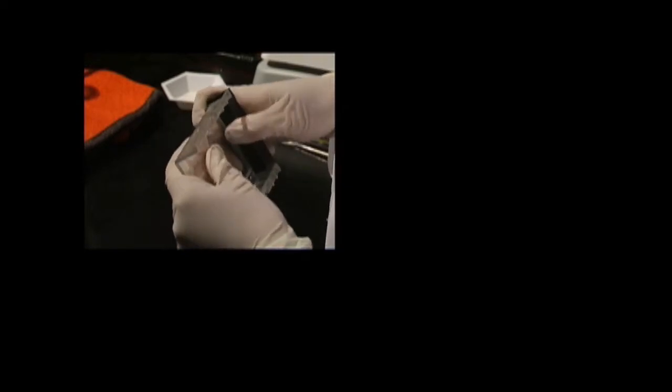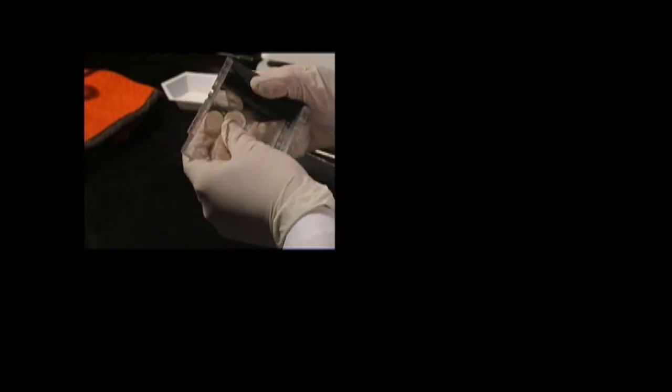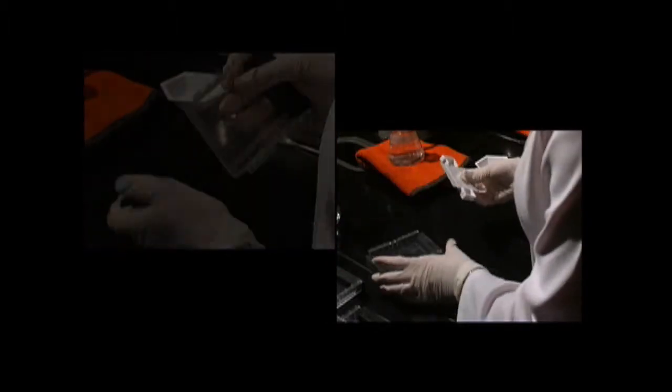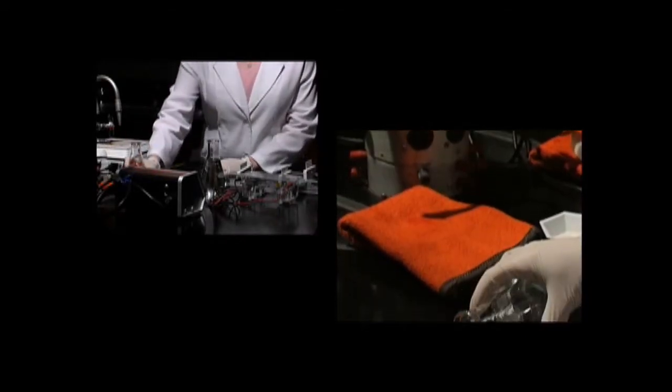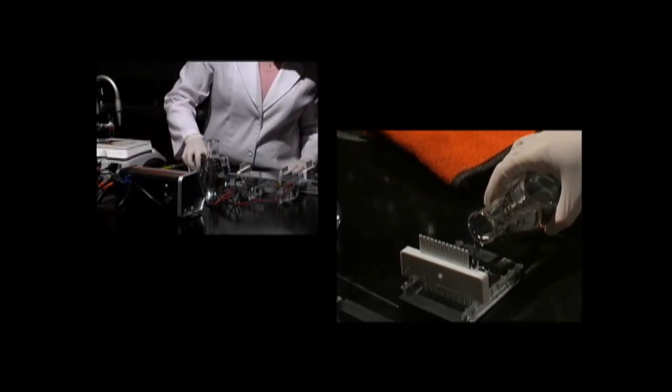To prepare the gel bed, first close off the open ends using rubber dams. Make sure that the bed is clean and dry. Place a well-former template, known as a comb, in the first set of notches nearest the end of the gel bed. Make sure it's on a level surface, and pour the agar solution into it. Allow 20 minutes for it to solidify.